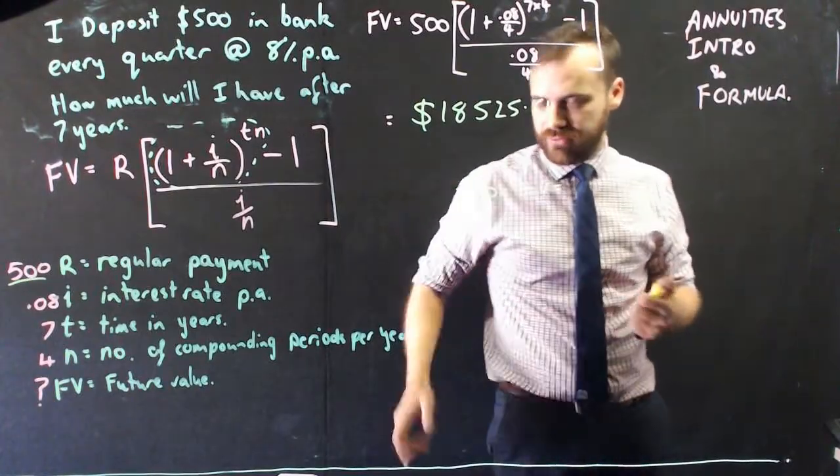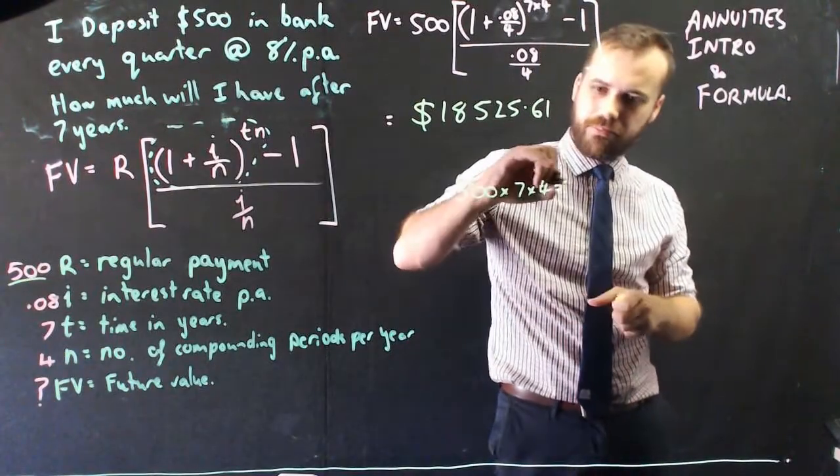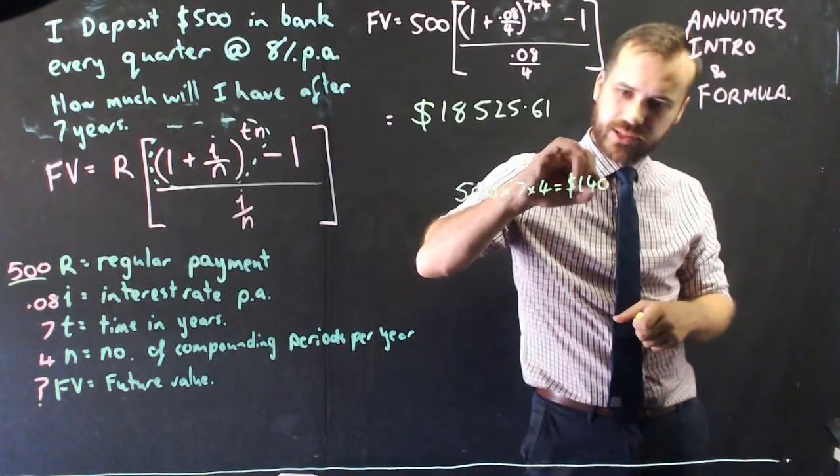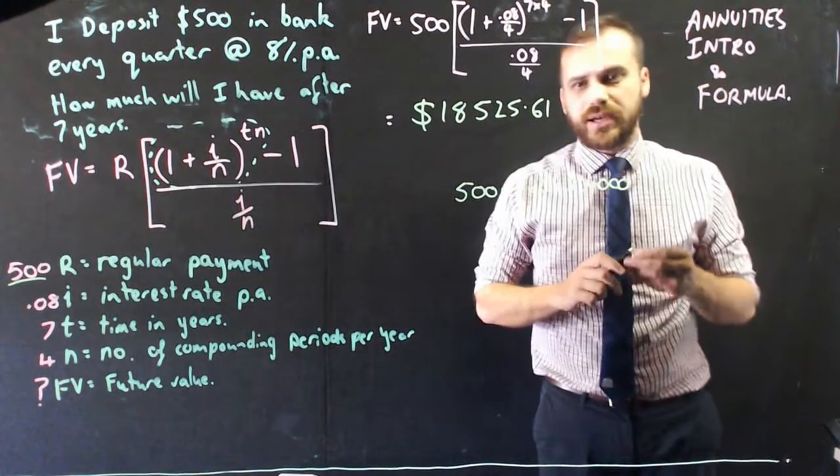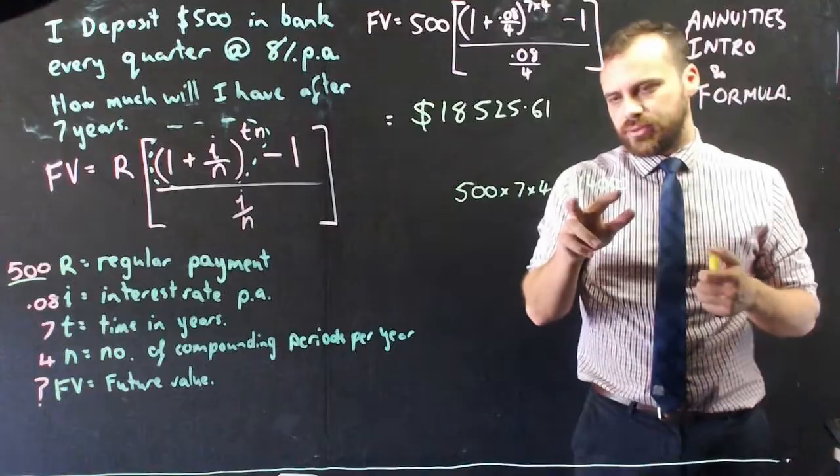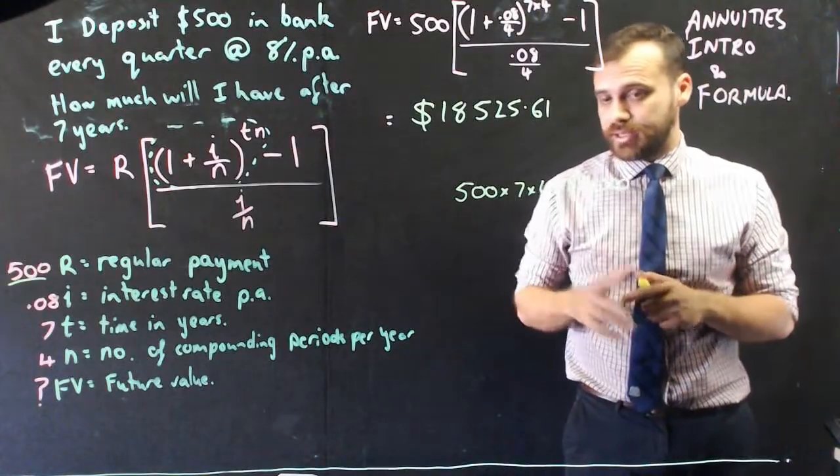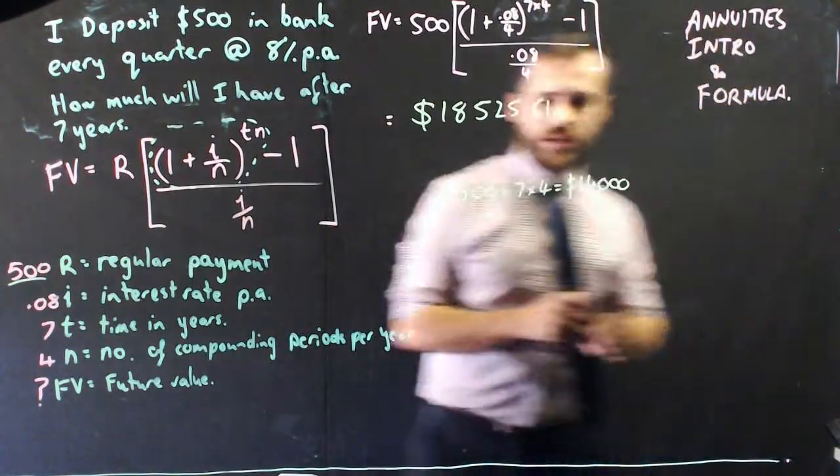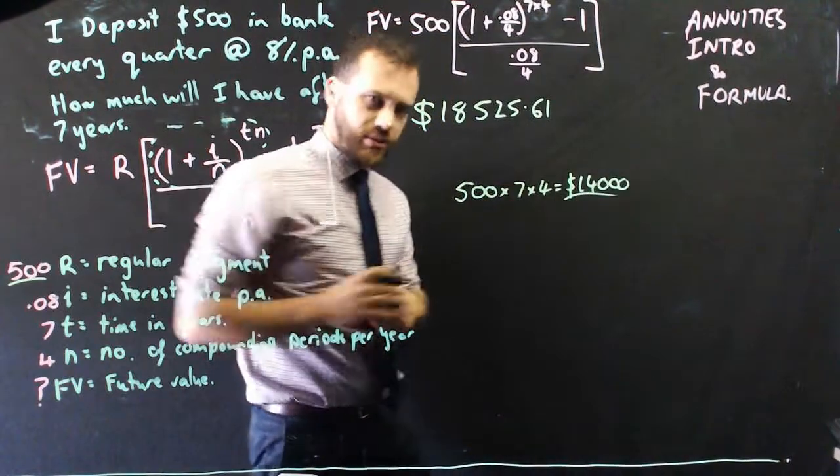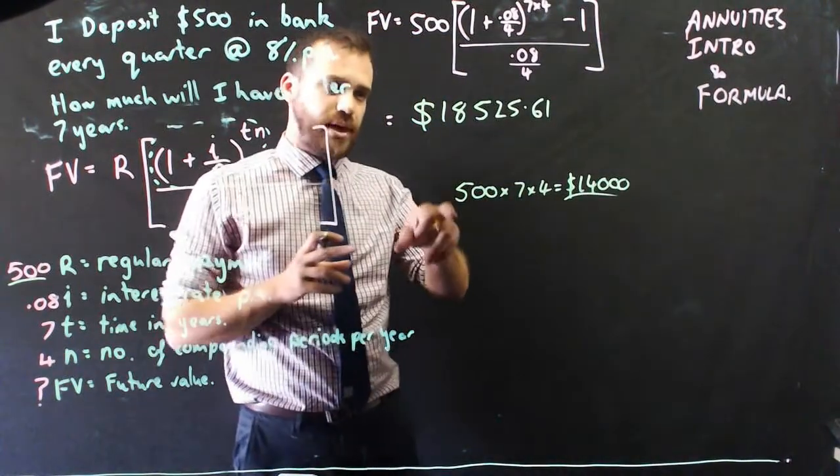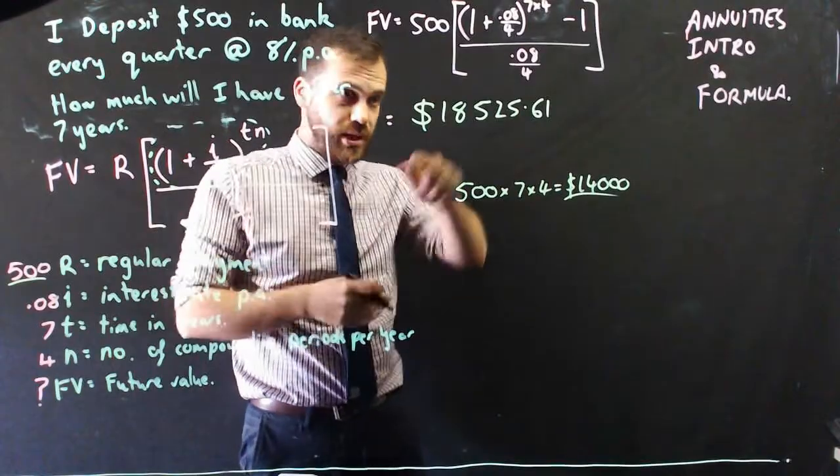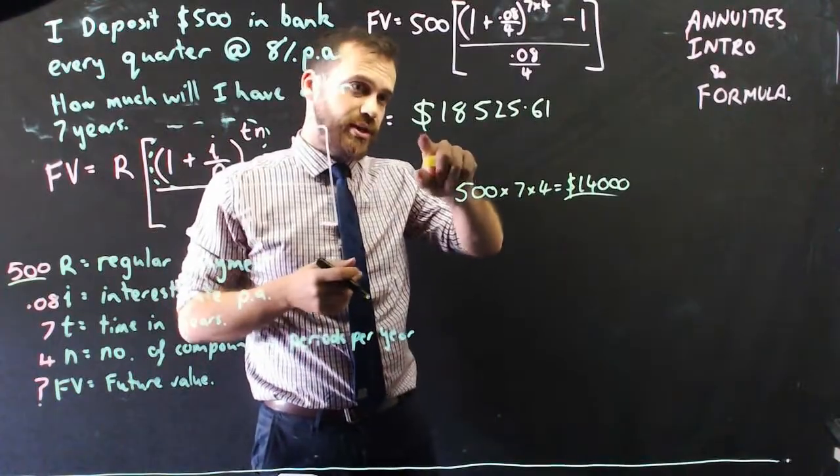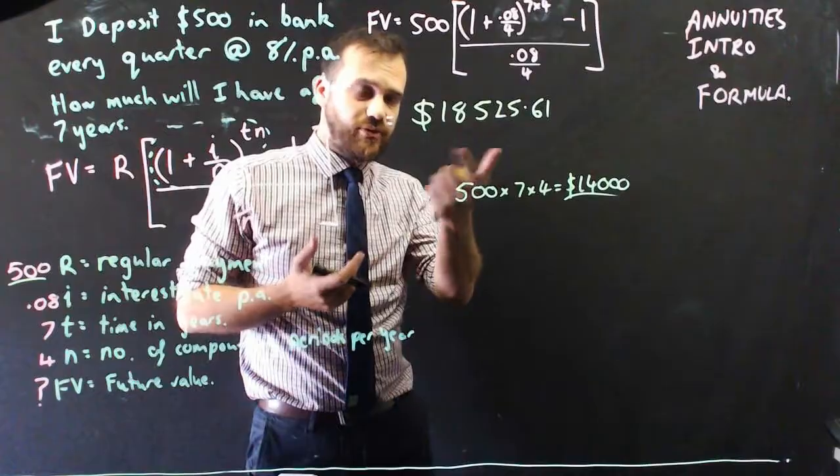That would mean that I made $500 times 7 years and 4 times every year. So $500 times 28. Now, $500 times 28 is $14,000. Okay, and so that means that if I didn't put it in a bank account, I'd be earning $14,000, but because I put it in a bank, I'm earning some interest on top of that, and in this case, that interest amounts to about $4,500.